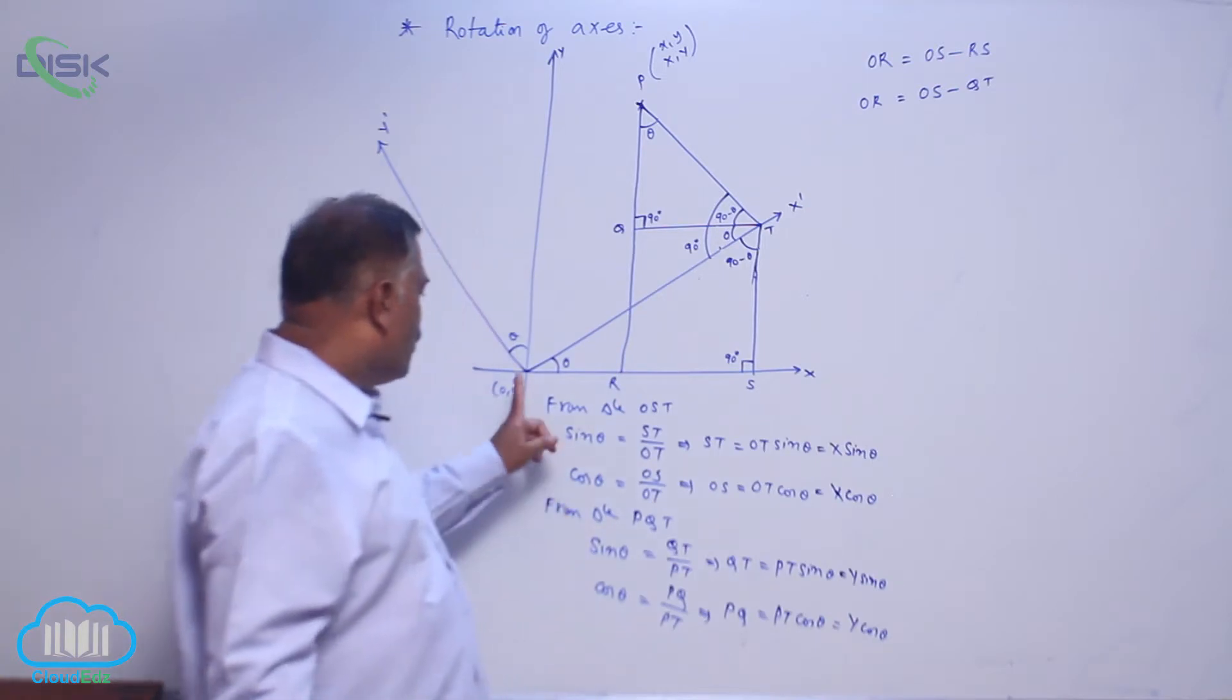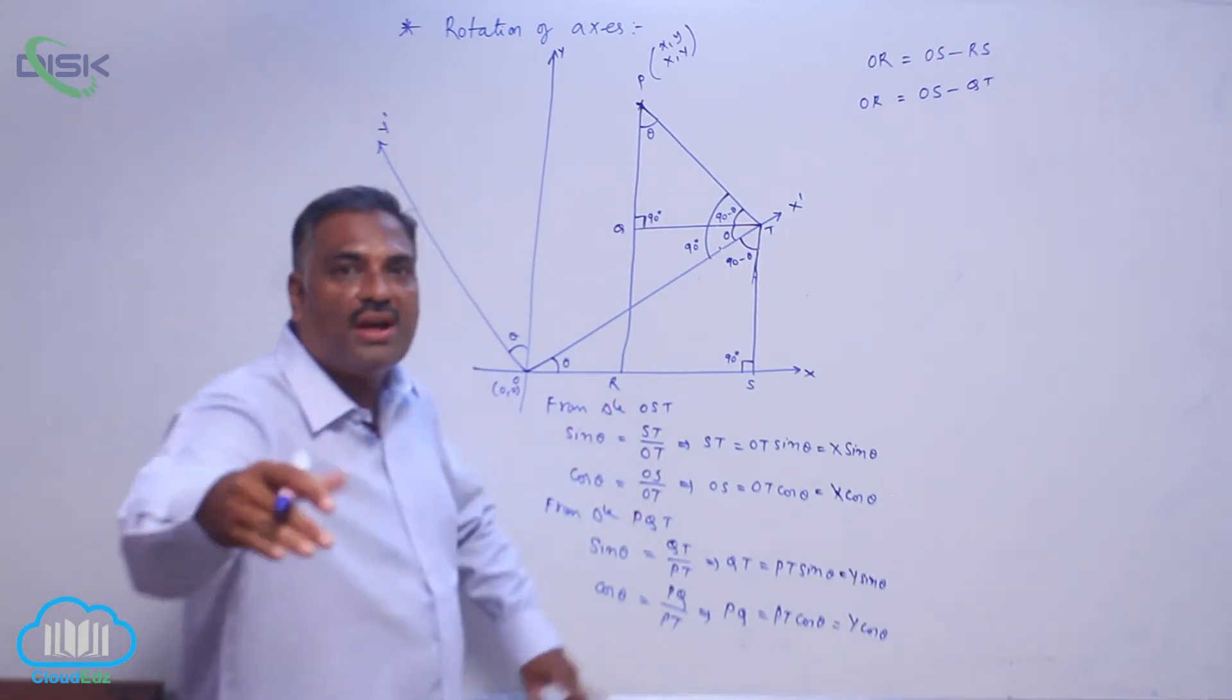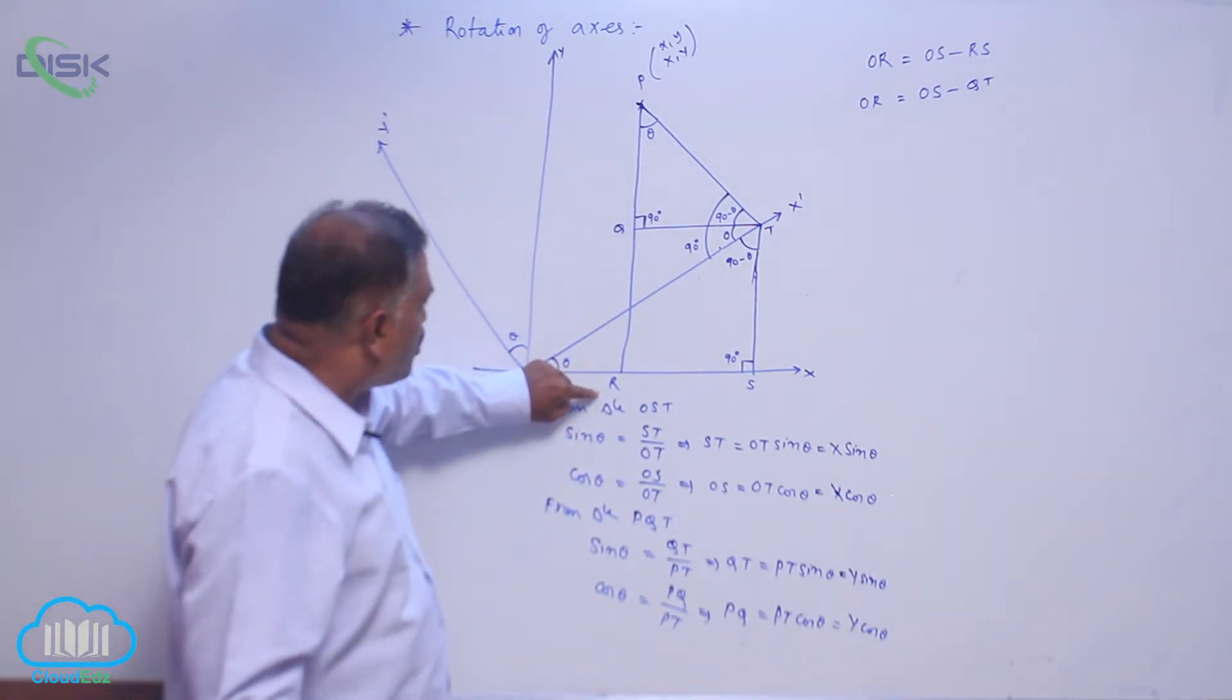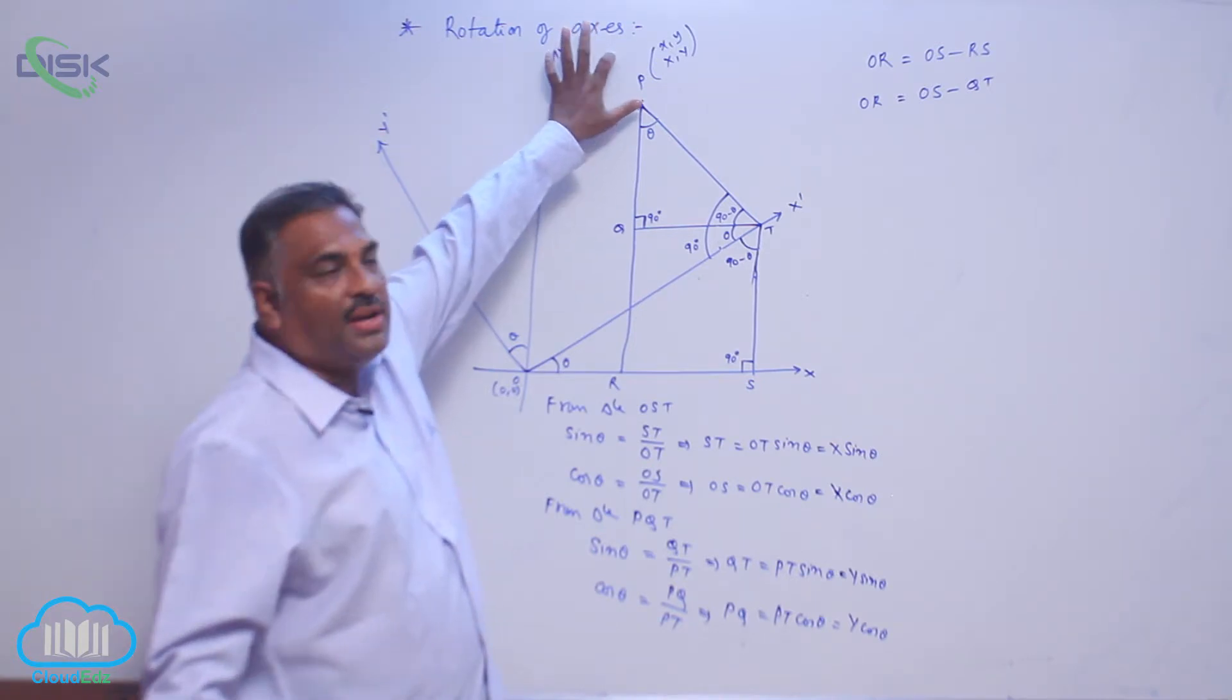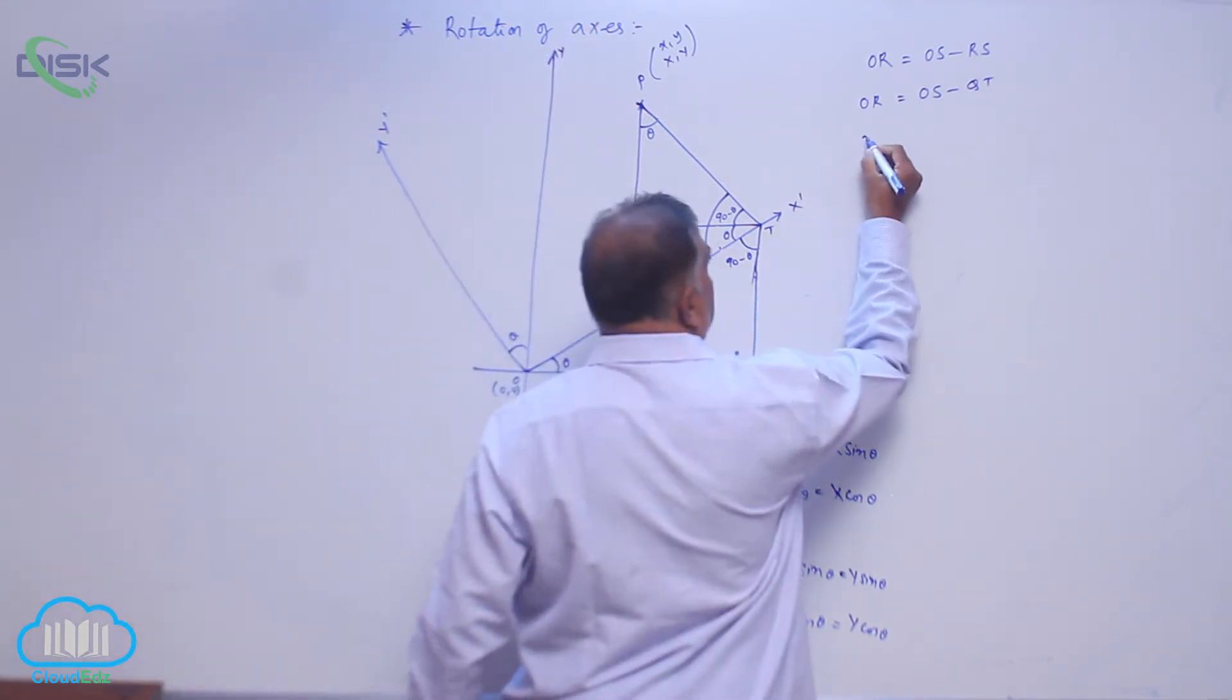Now check one by one. Check one by one: OR, the old horizontal distance referring to X coordinate of the point, that is small x, is equal to, already we know OS value, that is X cos theta minus QT.